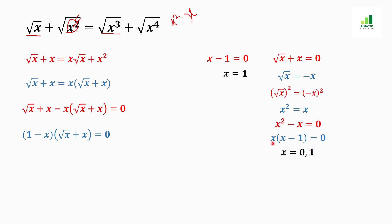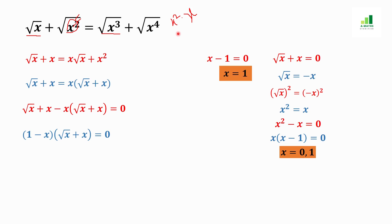So our solution for x is x equals 1 from the first equation, and x equals 0 from the second equation. The complete answer is x equals 0 or x equals 1. I hope you liked this video. If you did, please hit the like button and subscribe to our channel for more upcoming videos. Thank you.